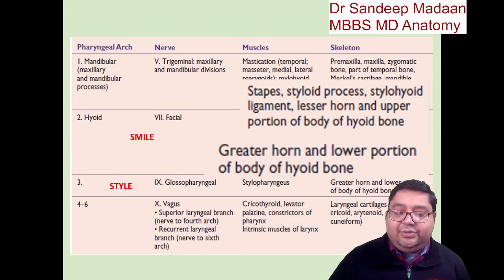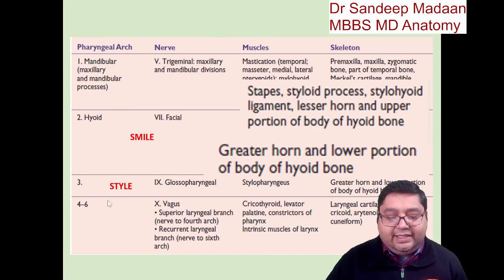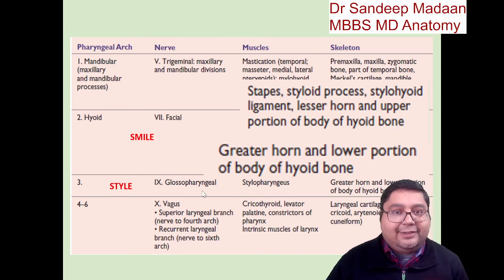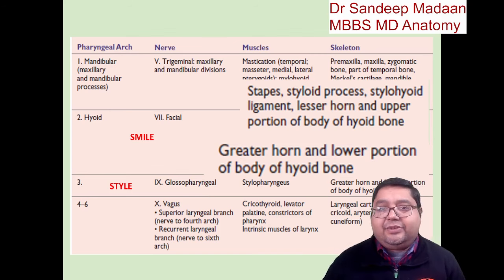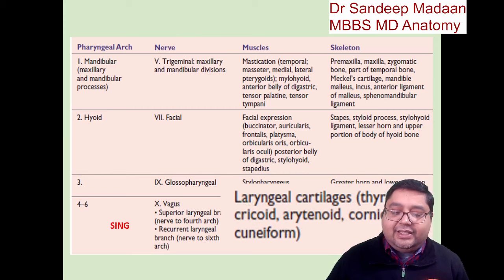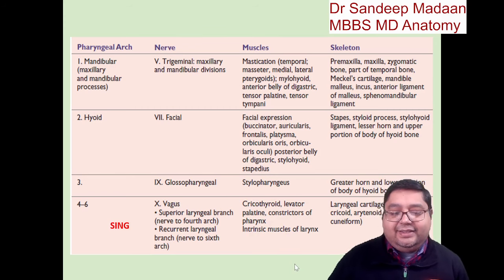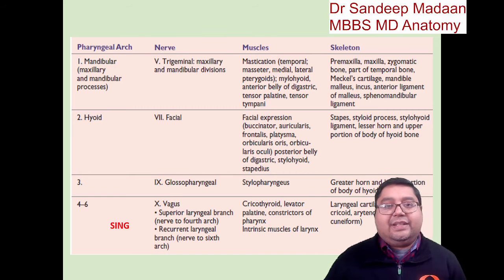So the baby sequence is: first feed, then smile, then style — and after that the baby will grow up and will sing. For singing, what is required? The larynx. So the fourth and sixth arches give all the laryngeal cartilages, along with the muscles of the pharynx and the intrinsic muscles of the larynx. This is a different approach where we have learned the nerve supply, the muscular derivatives, and the skeletal derivatives of the pharyngeal arches.